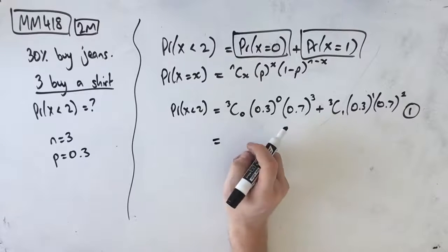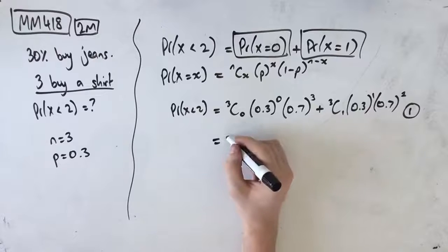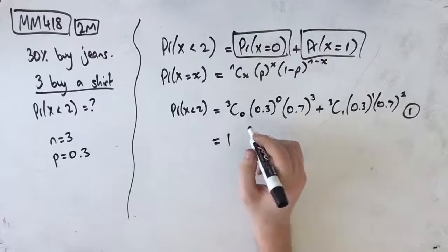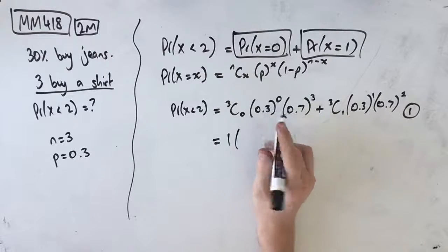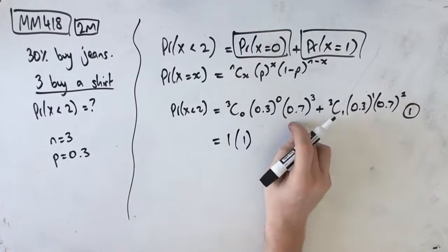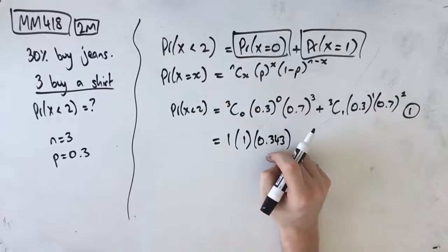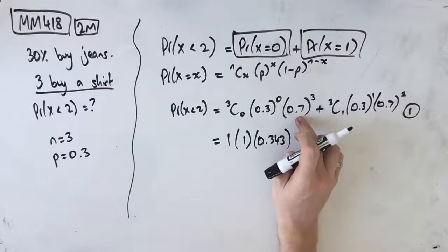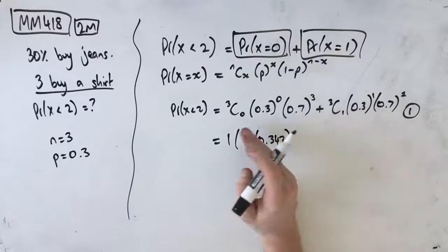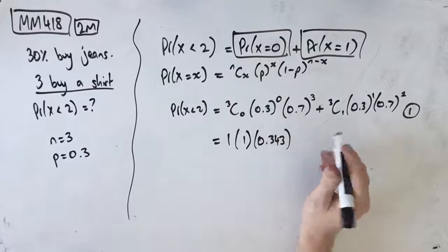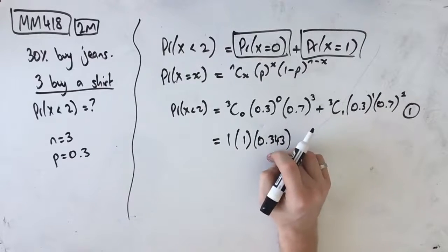Then we can evaluate this as normal. 3C0 is 1, so anything C0 is 1. And then 0.3 to the power of 0 is 1. 0.7 to the power of 3 is 0.343. If you don't know how to do this without a calculator, just do 7 times 7 times 7 and move your decimal place 3 points back. So 7 cubed is 343, so 0.7 cubed is 0.343.